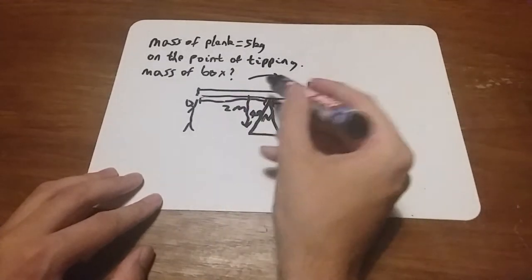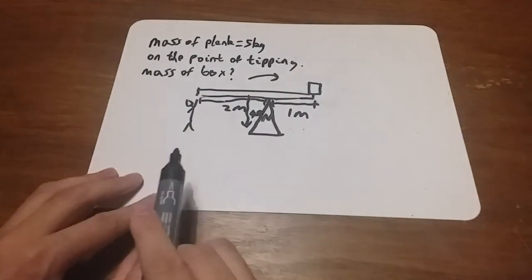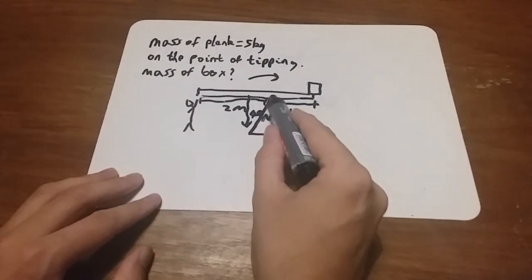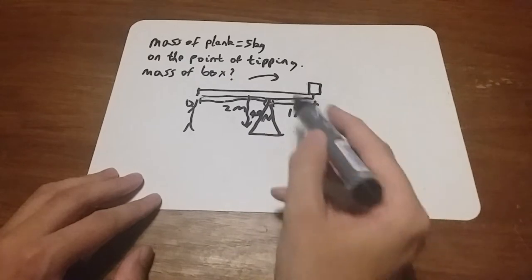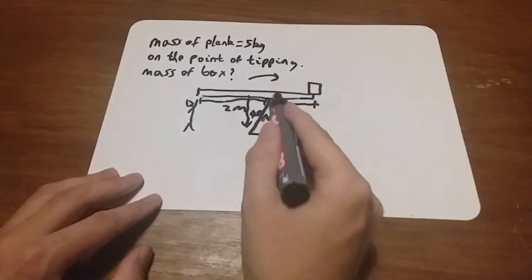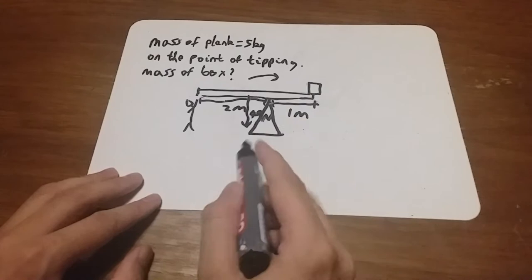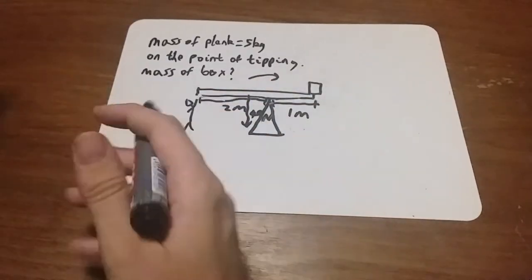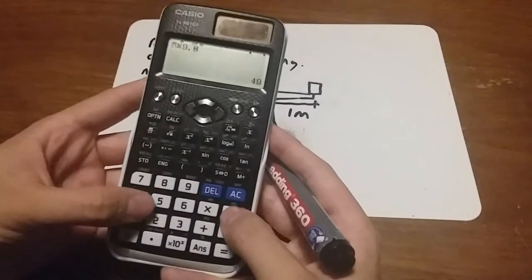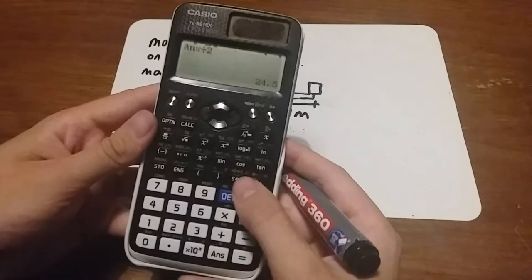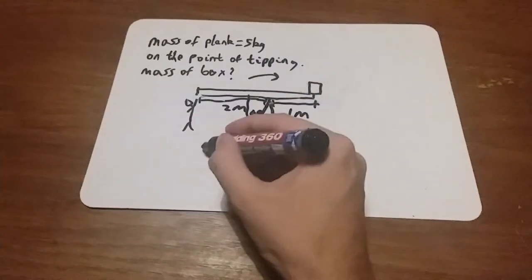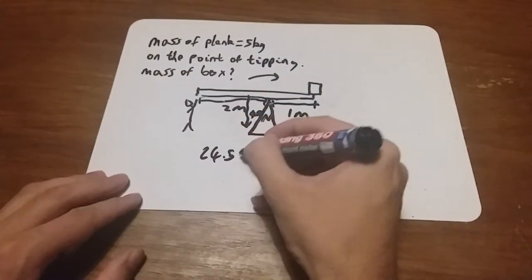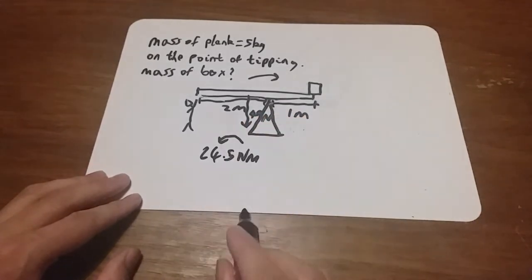Let's take moments around the pivot point here. The total moment going around that way would be 0.5 meters times 49. If I do 0.5 times 49, I divide it by 2, I get 24.5. So we've got 24.5 newton meters going around that way.